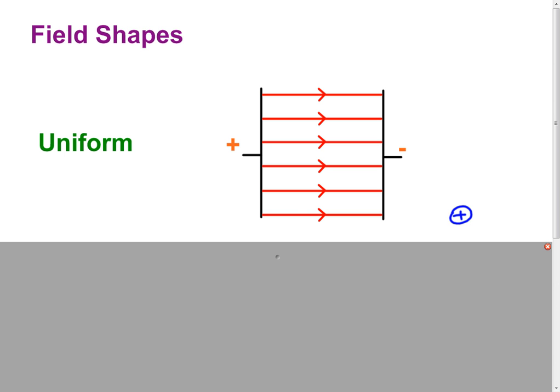So, uniform field, the strength of the field is the same everywhere within that field. So everywhere within this uniform field, the field strength is the same.